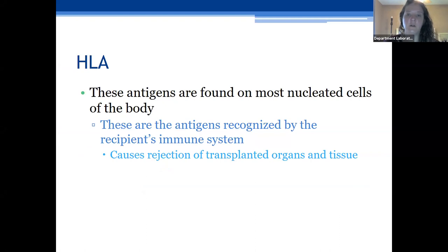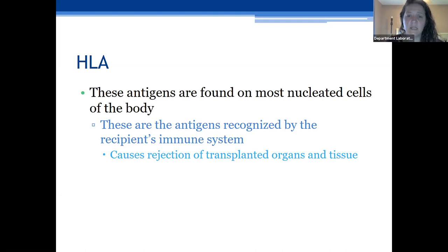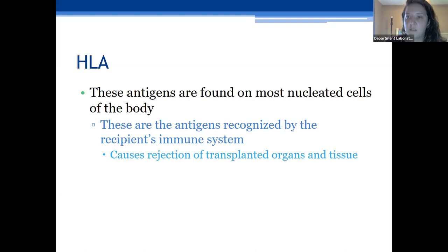Your HLA antigens are found on most nucleated cells of the body, and they're divided into classes. You have three classes, and class one are even found on platelets. These are the antigens that are recognized by the recipient's immune system, and this is what causes tissue and organ rejection. This is why it's very important that we provide HLA-matched tissues as much as possible.